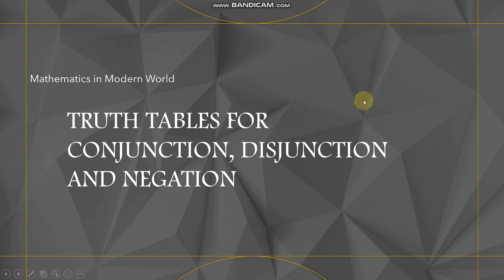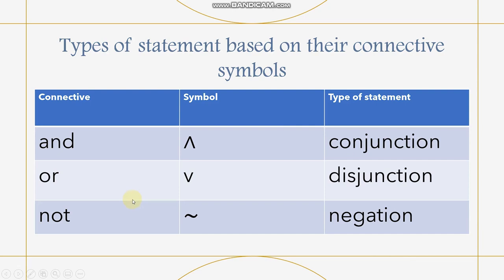Good day everyone. Our topic for this video is truth tables for conjunction, disjunction, and negation. First, let us note the connective symbol and the type of statement that we are going to use for this topic. We have different types of connective symbols based on their type of statement. We have this symbol — this is the caret (∧), and it stands for 'and', and the type of statement is conjunction.